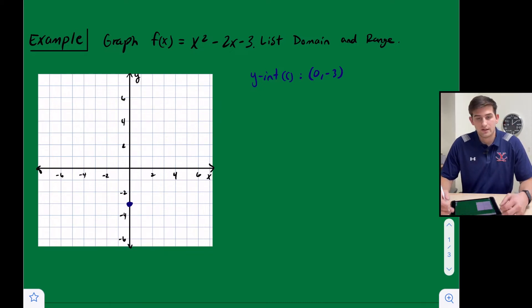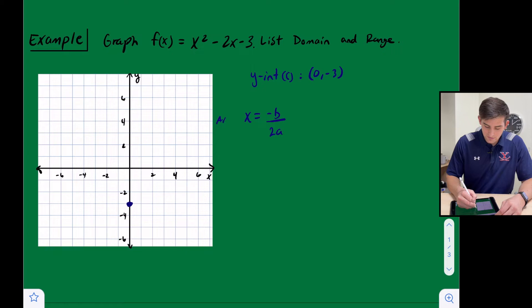All right, now let's find our vertex or our axis of symmetry. So to do that, we're going to say x equals opposite of b over 2a. So this is us finding our axis. So x equals, and once again, a is 1, b is negative 2, and c is negative 3.